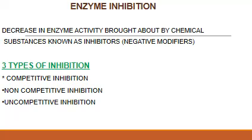First of all you should define what is enzyme inhibition. Enzyme inhibition is brought about — that is, there is a decrease in the enzyme activity — and this is brought about by chemical substances known as negative modifiers or inhibitors. There are three different types of inhibition: competitive, non-competitive, and uncompetitive inhibition. Then you go on to describe what is competitive inhibition.